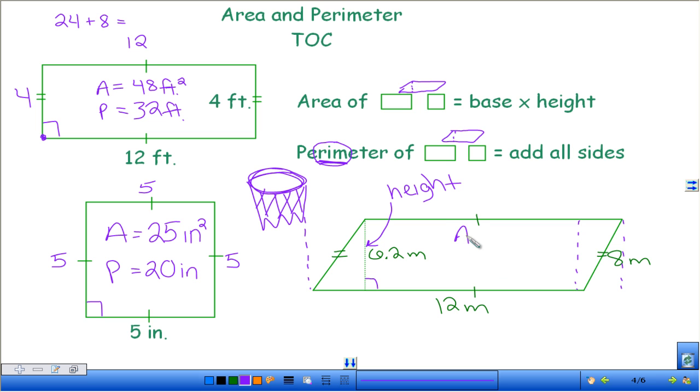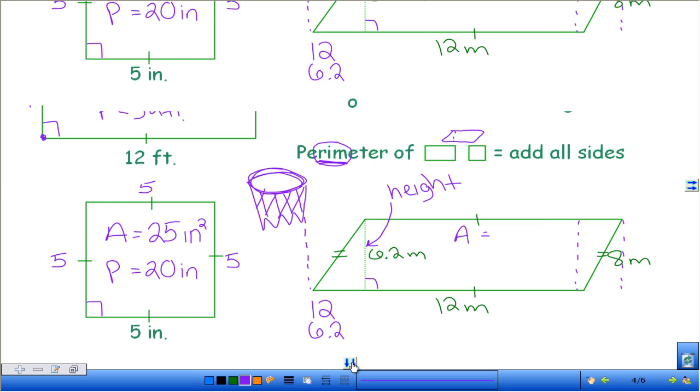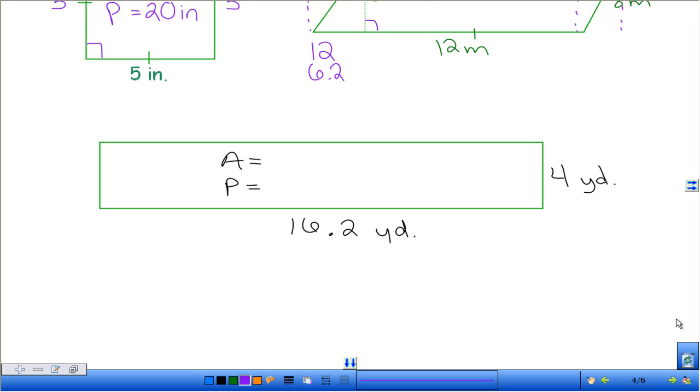So for area, who can raise your hand and tell me which two we're going to multiply together for base and height? Taylor Day? Which one's the height, then? Tell me the measurement. Perfect. So go ahead on your paper. Let's do this together. And we're going to do 12 times 6.2.